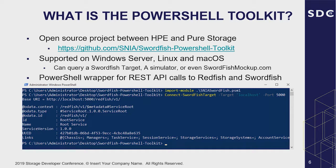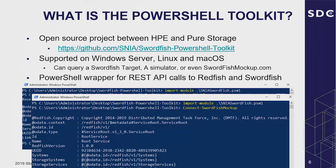Once you connect to the array, it returns back the base object of that device — the root structure of /redfish/v1. You'll notice we're returning the actual object, and these are all the JSON items you'd expect to find. I also wrote a command to connect to the Swordfish mockup website, which treats it exactly the same because the Swordfish mockup site and an actual Swordfish target look the same.